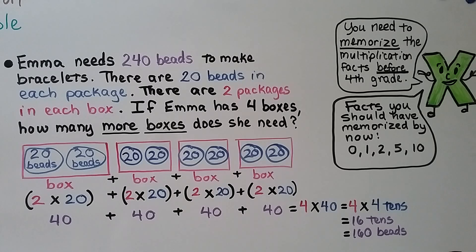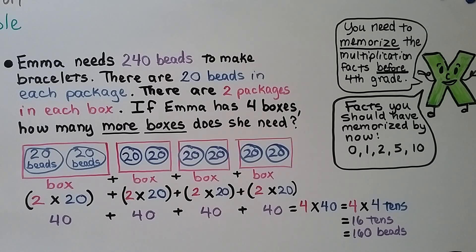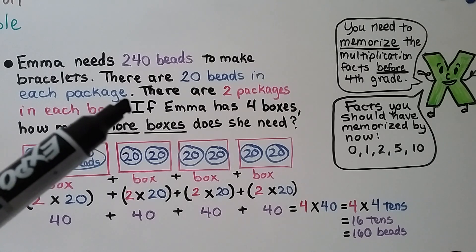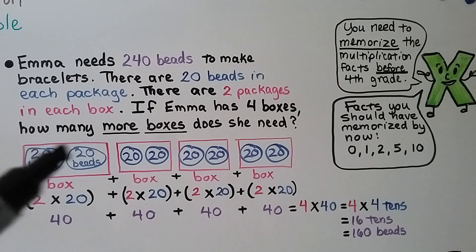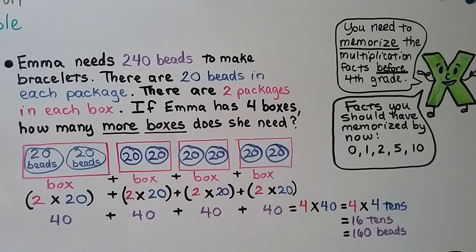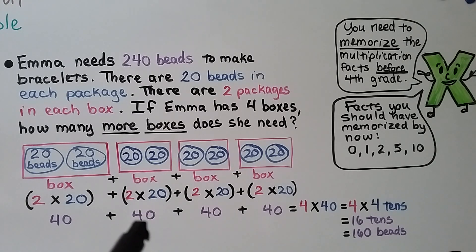When we have a word problem that looks difficult to understand, we can break it into smaller parts. This one says: Emma needs 240 beads to make bracelets. There are 20 beads in each package. There are 2 packages in each box. If Emma has 4 boxes, how many more boxes does she need? Let's break this into smaller parts. There are 20 beads in each package and 2 packages in each box. We can draw a diagram to help — if there are 20 beads in a package and 2 packages in 1 box, she has 4 boxes, so we make 4 of them. Each box has 2 times 20 beads, equal to 40.